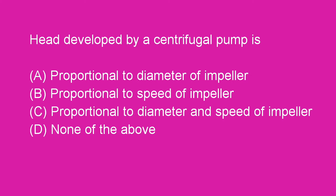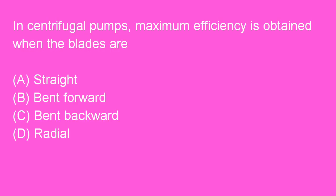Next question: Head developed by a centrifugal pump is proportional to diameter and speed of impeller. Option C is right. Next question: In centrifugal pumps, maximum efficiency is obtained when the blades are bent backward. Option C is right.